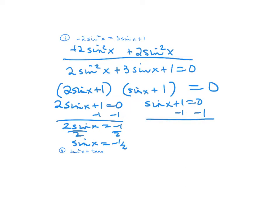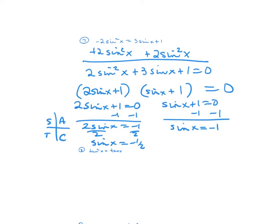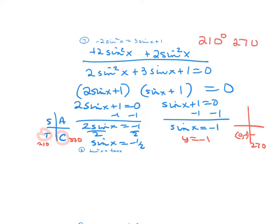From the other factor, sine x equals negative 1. Sine looks at y, and all students take calculus — sine is negative in quadrants 3 and 4. Going to the unit circle to find where y equals negative 1 half, it's at 210 and 330. For the other factor, y equals negative 1 at the ordered pair (0, -1), which corresponds to 270 degrees. So the answer for number 7 is 210, 270, and 330 degrees.